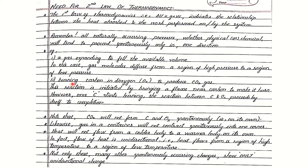Now look at the second example. Carbon burns in dioxygen to produce carbon dioxide gas. Carbon cannot catch fire on its own; in order to initiate this, we need to bring a flame near carbon in order to ignite it. But once carbon starts burning, the reaction between carbon and dioxygen would proceed by itself spontaneously to completion, and note that the reverse is not possible. One more example: flow of heat is always unidirectional — it occurs spontaneously only from a region of high temperature to a region of low temperature, but heat will not flow from a colder body to a warmer body on its own.